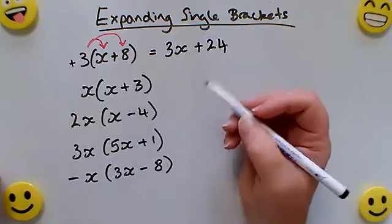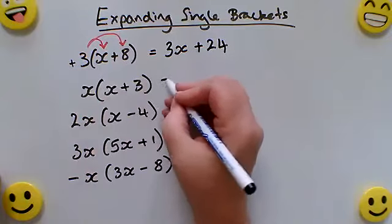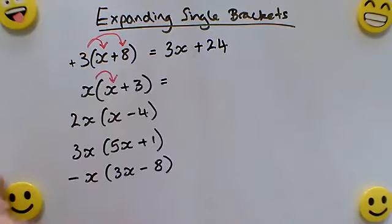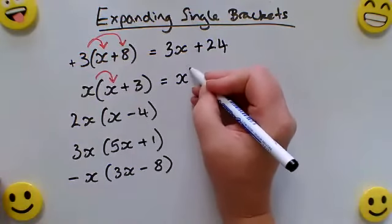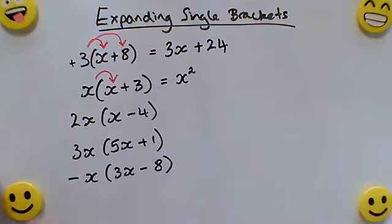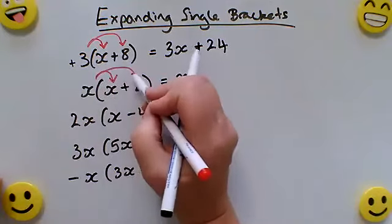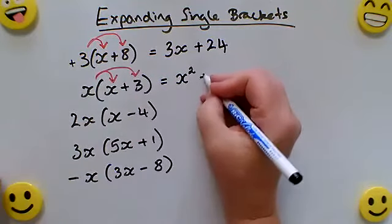The second example: this time I've got x times by x, so a number times by itself, or a letter times by itself, we write as squared. Then x times positive three would give me positive three x.